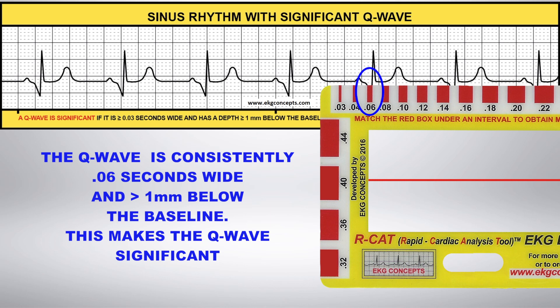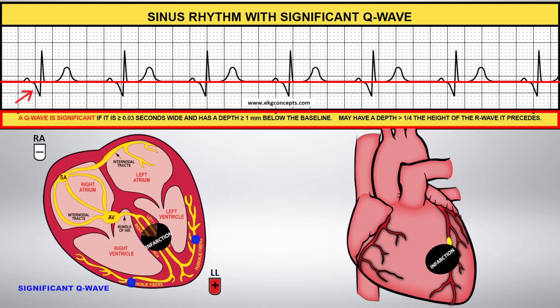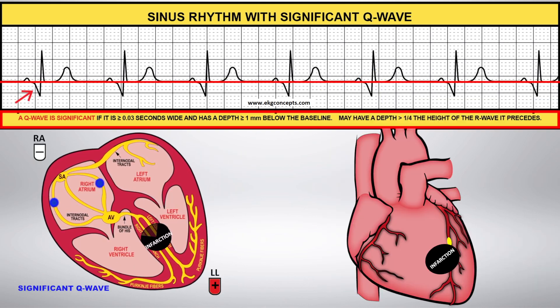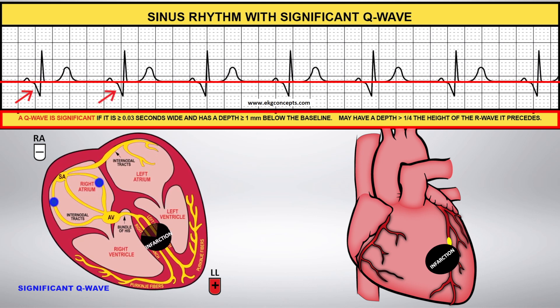When a Q wave is greater than .03 seconds wide and greater than 1 mm below the baseline, it is considered significant. The appearance of significant Q waves usually indicates the third and final stage of a myocardial infarction.